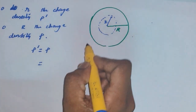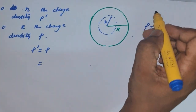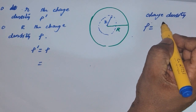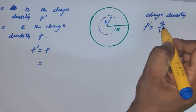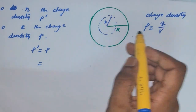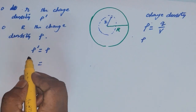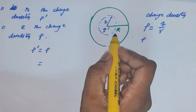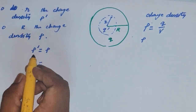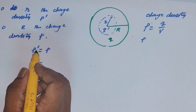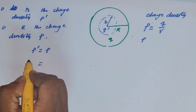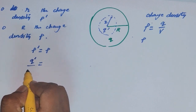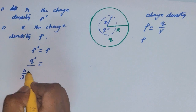Since the charge densities are equal, we apply the formula. In general, charge density is equal to the amount of charge per unit volume. So rho prime equals q prime — the amount of charge inside the sphere of radius small r — divided by the volume of the sphere of radius small r.